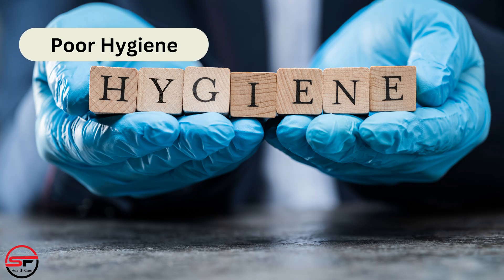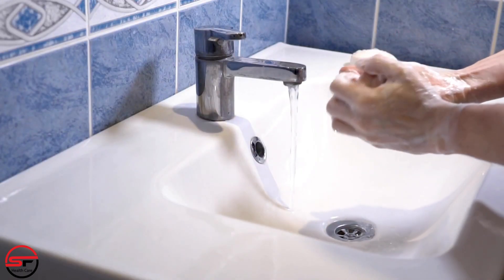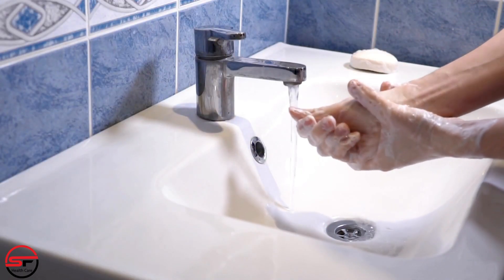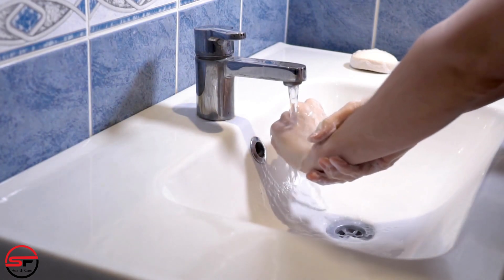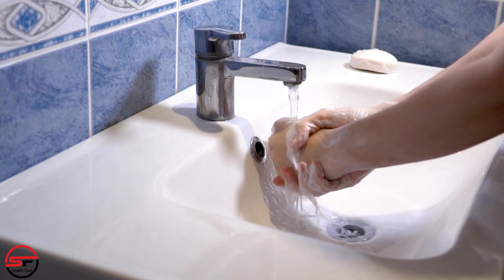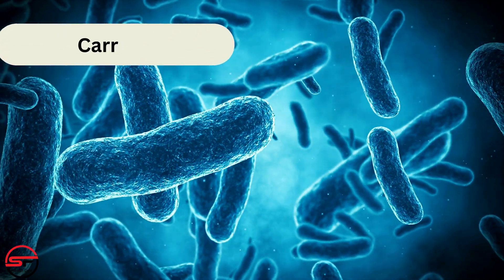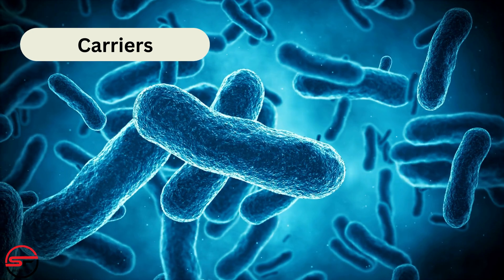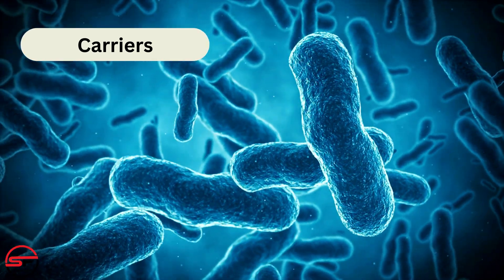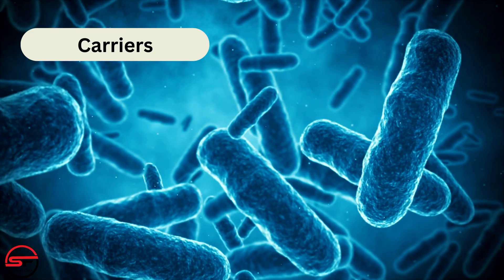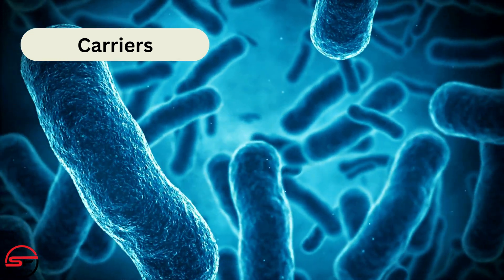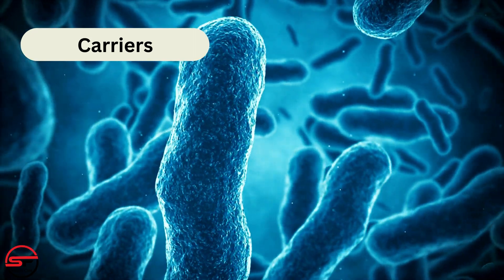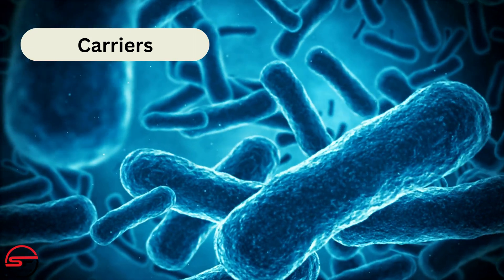Poor hygiene: direct or indirect contact with an infected person can also spread the bacteria. This can occur through poor hygiene practices, such as not washing hands after using the toilet, changing diapers, or handling contaminated items. Carriers: some individuals can become carriers of the Salmonella typhi bacterium without showing symptoms. These carriers can continue to spread the bacteria to others through their stool or urine, even after they have recovered from the illness.